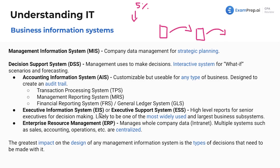What about the executive information system, also known as the executive support system? These are high-level reports for senior executives in order to assist them with decision-making. These are likely to be the most widely used and largest business subsystems — a broad term, but most widely used by executives in decision-making. Really just try your best to know what's here and generally understand this, memorize how it looks, what's under what. These systems are just there to give you an indication of what is under the AIS — what's an example of the components of an accounting information system.